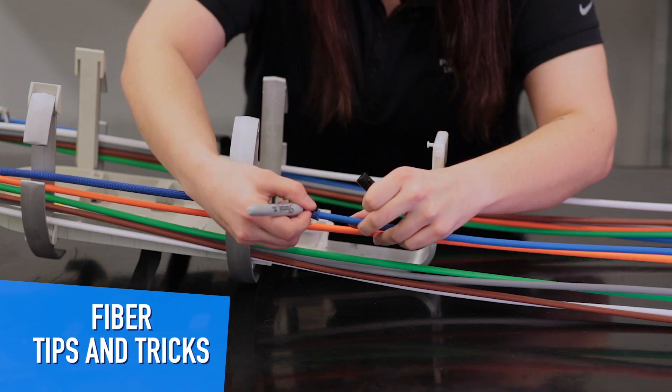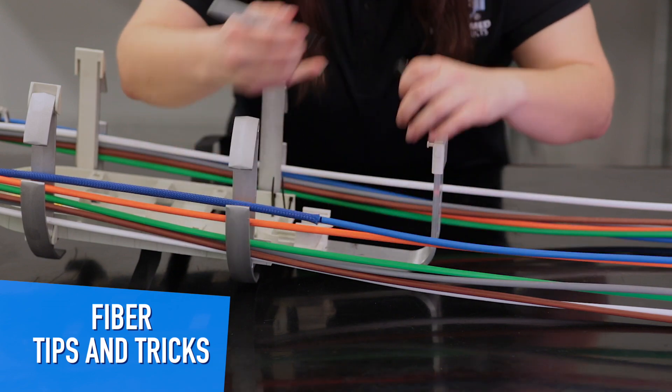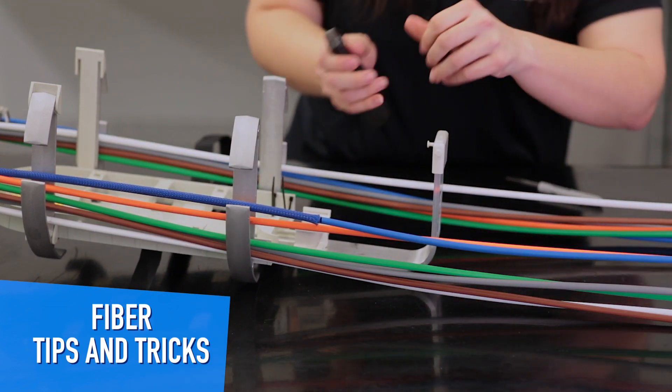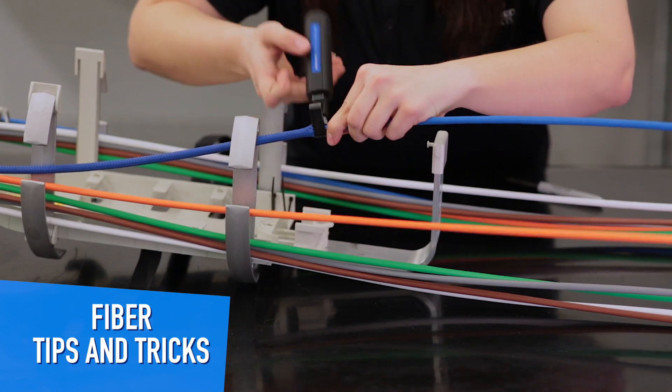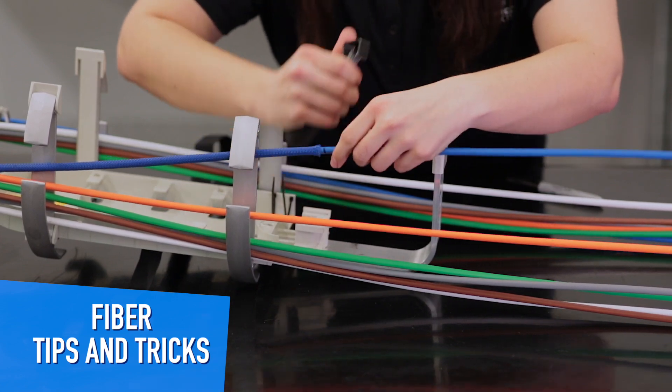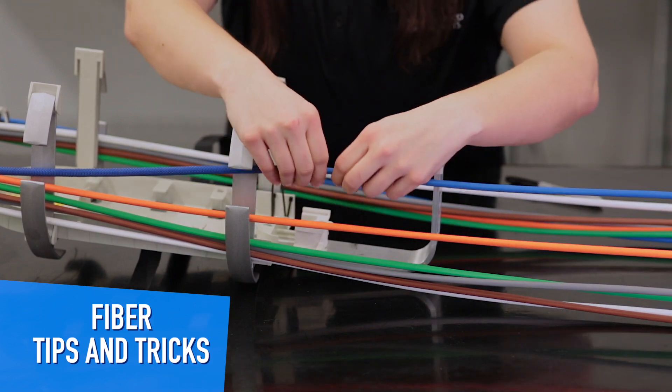Mark the end of the buffer tube with a marker. Ring cut the buffer tube. Expose the bare fiber.